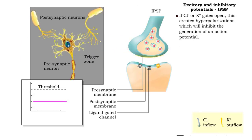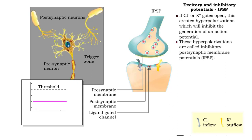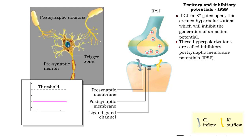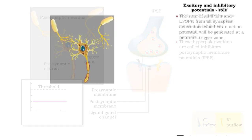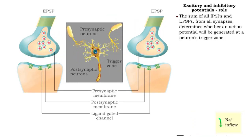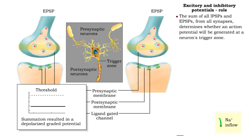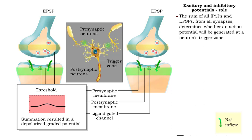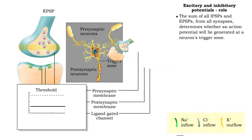Hyperpolarizations, the result of chloride or potassium gates opening, inhibit the generation of action potentials. These hyperpolarizations are known as inhibitory postsynaptic membrane potentials, or IPSPs. The sum of all IPSPs and EPSPs, from all synapses, determines whether an action potential will be generated at a neuron's trigger zone.